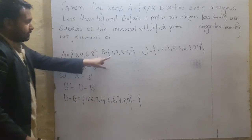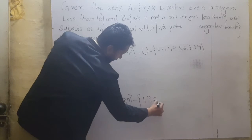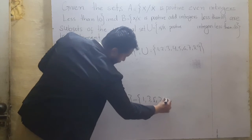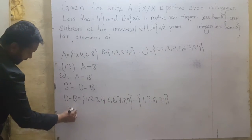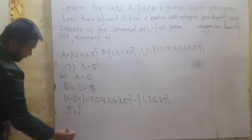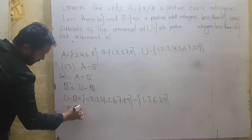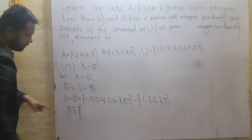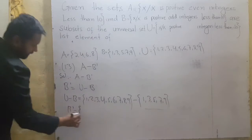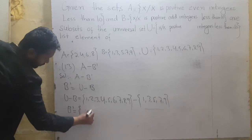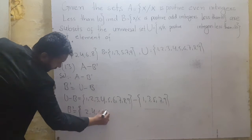Set B has elements {1, 3, 5, 7, 9}. So B complement equals {2, 4, 6, 8}.